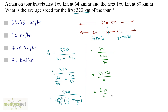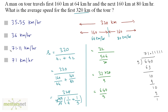Dividing 640 by 9 gives approximately 71.11 kilometers per hour as the average speed for the first 320 kilometers of the tour.